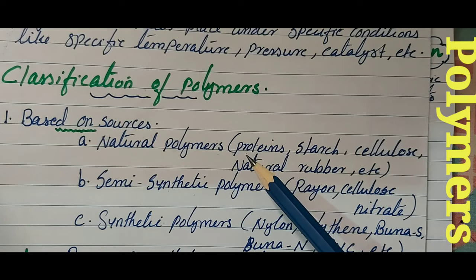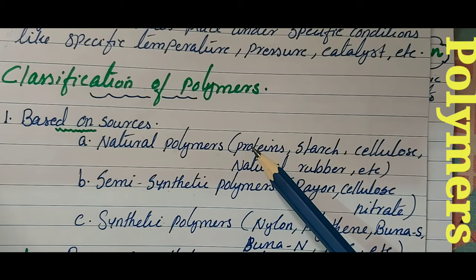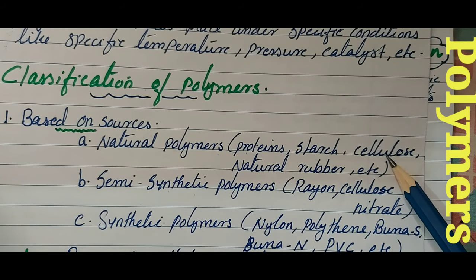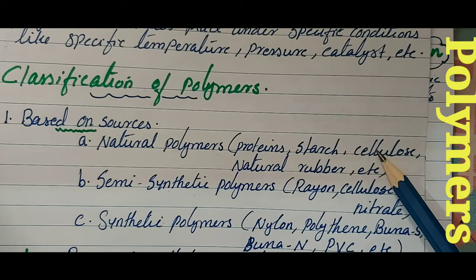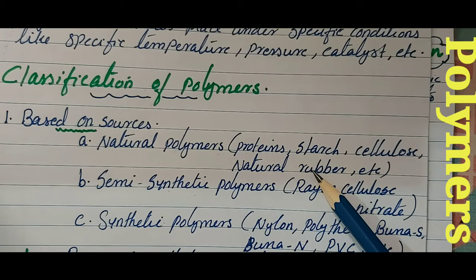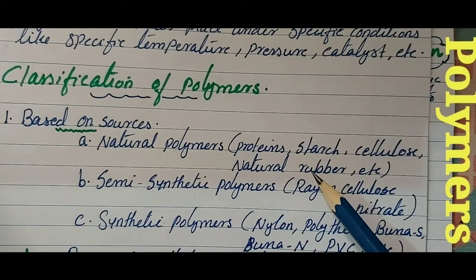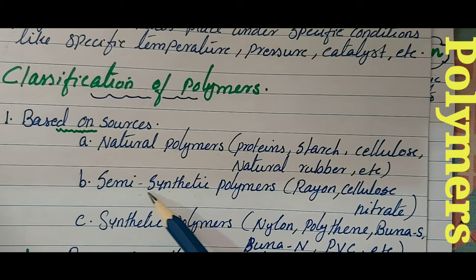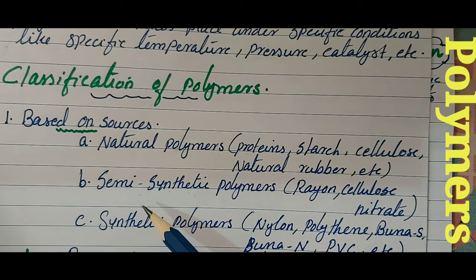Natural polymers are polymers obtained from natural sources. For example, protein is present in our body — proteins are polymers whose monomers are amino acids. Starch and cellulose are also polymers whose monomers are glucose molecules. Natural rubber is chemically called polyisoprene, so its monomer is isoprene.